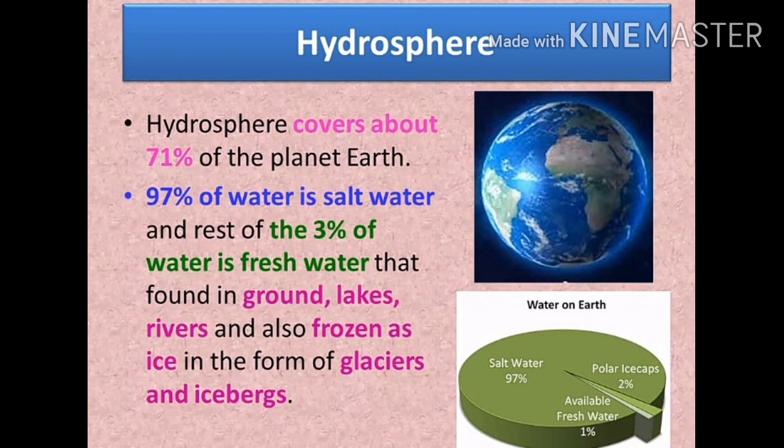Now let us learn about hydrosphere. Hydrosphere covers about 71% of planet earth. Among that, 97% of water is salt water, and the remaining 3% is fresh water. This fresh water is found in the ground, lakes, rivers, and also frozen as ice in the form of glaciers and icebergs.